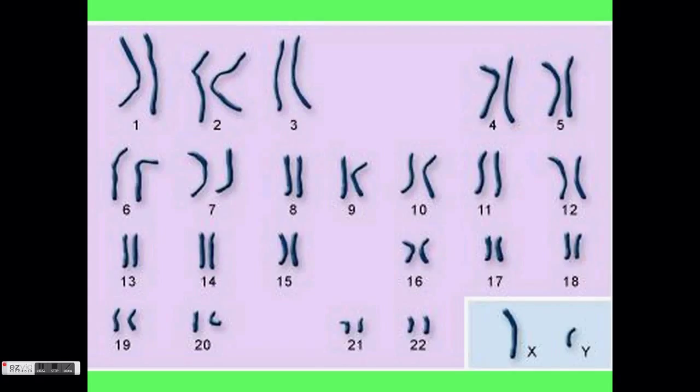Chromosomes are ordered by length, where one is the longest and the length decreases as the numbers go up. The X and Y chromosomes you see determine the gender of the organism.